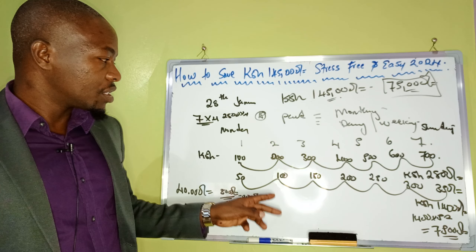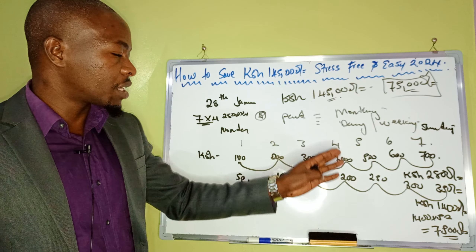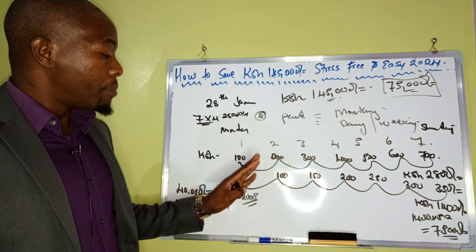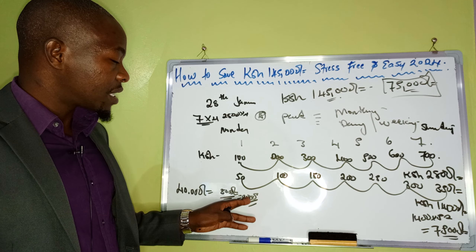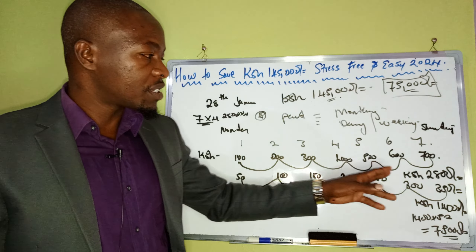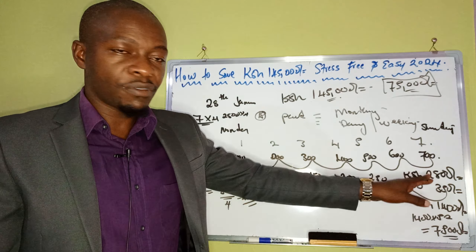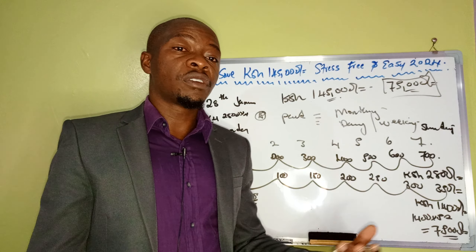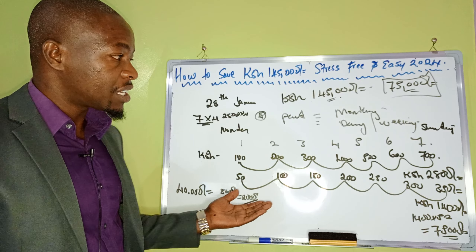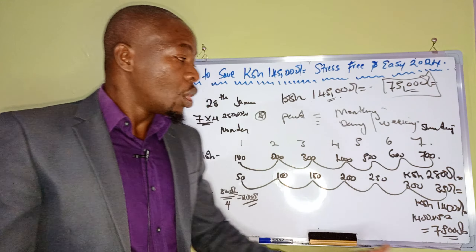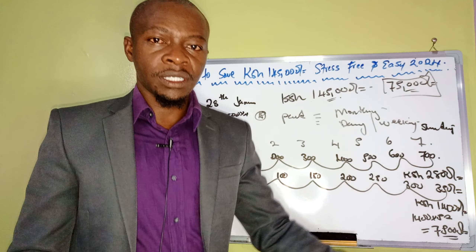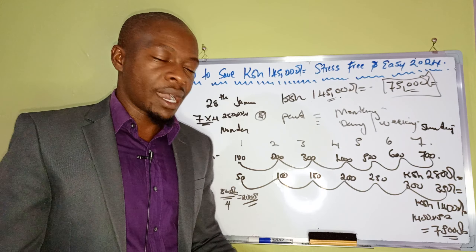For monthly earners, maybe you have a template guiding your savings. If not, you can still use the 2,800 weekly framework. While a daily saver completes their week one saving 100, 200, and so on, the monthly earner hasn't received their salary yet. But once you get paid, you channel your 2,000 toward your savings immediately.